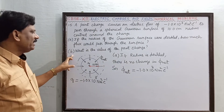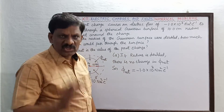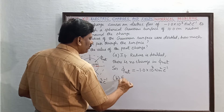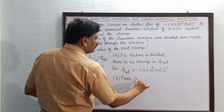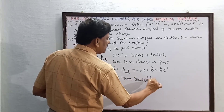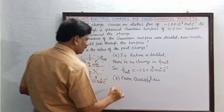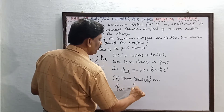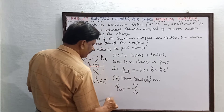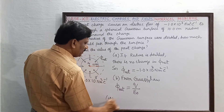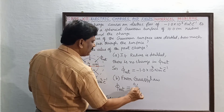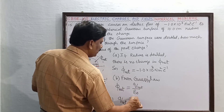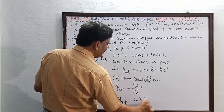Now subdivision B: what is the value of the point charge Q located at the center of the sphere? For subdivision B, we use Gauss's law. From Gauss's law, the net electric flux phi net equals Q divided by epsilon naught. This implies Q equals epsilon naught multiplied by phi net.